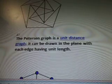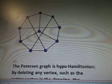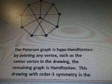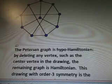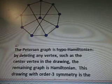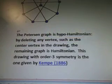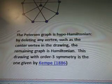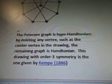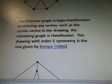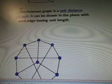It can be drawn in the plane with each edge having unit length. The Petersen Graph is Hypo-Hamiltonian — by deleting any vertex, such as the center vertex in the drawing, the remaining graph is Hamiltonian. This drawing, with order 3 symmetry, is one given by Kemp in 1886.